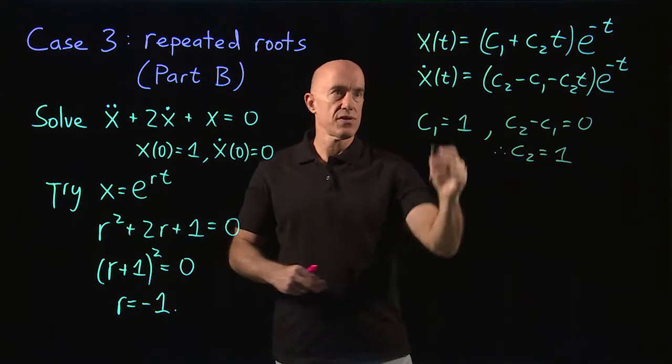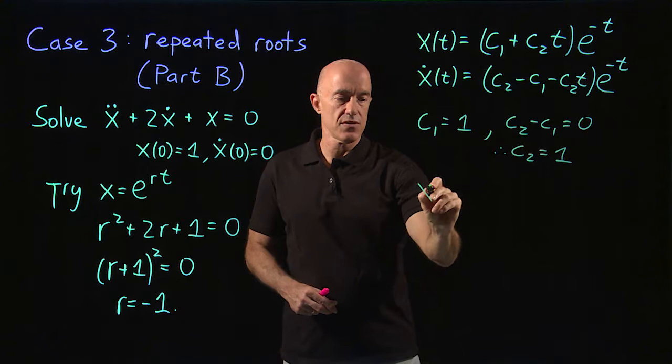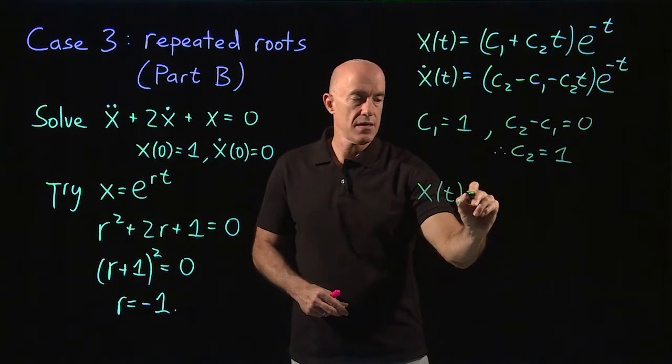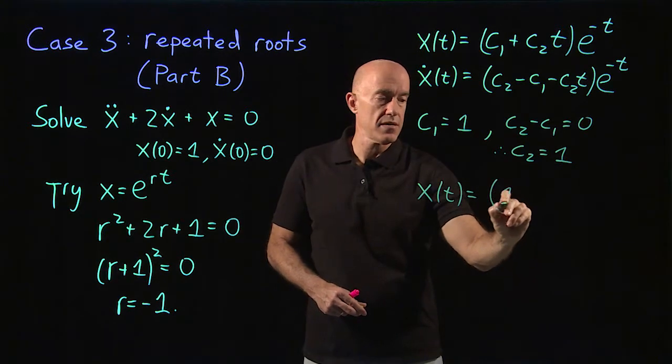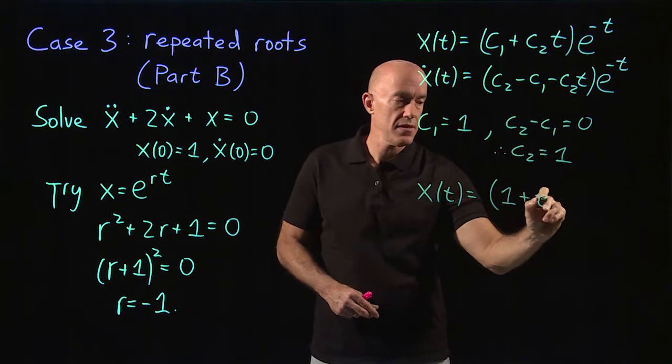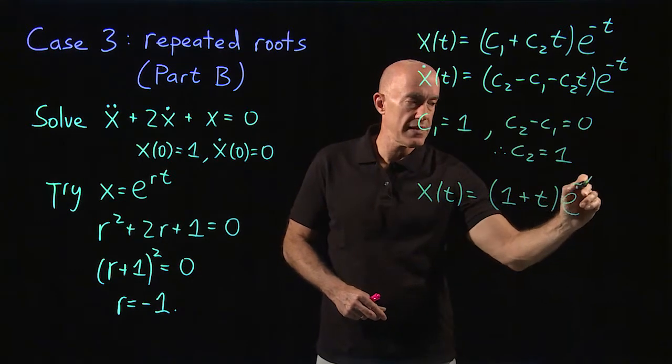Putting it together, we get our solution. x of t is equal to 1 plus t times e to the minus t.